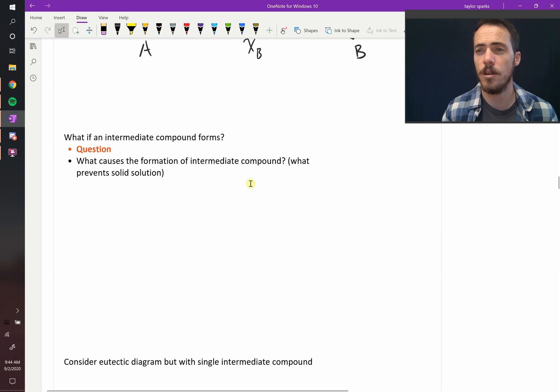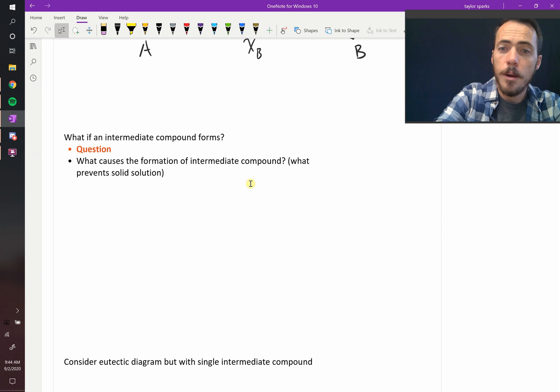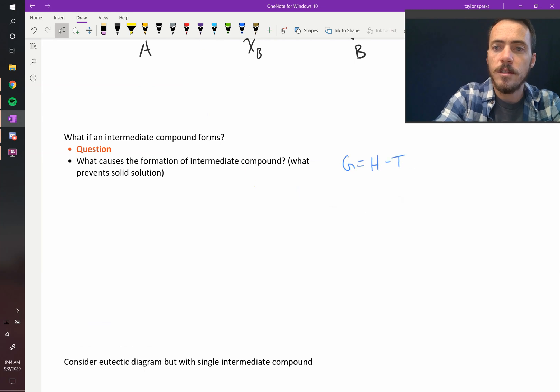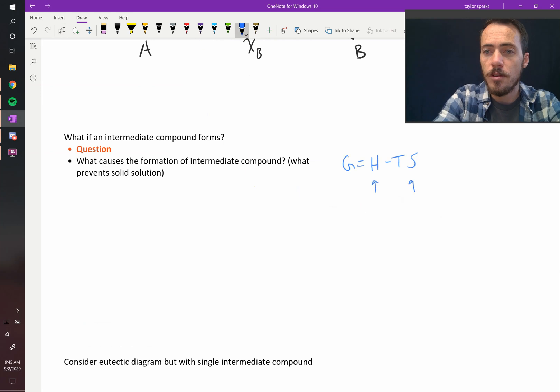First off, what causes their formation? In this class, any time something happens, it's because the free energy is lowered. We know that G equals H minus TS. So our change in free energy is either coming from enthalpy or entropy. So what's driving it in this case?